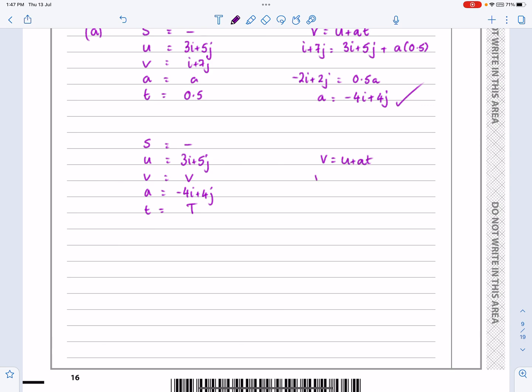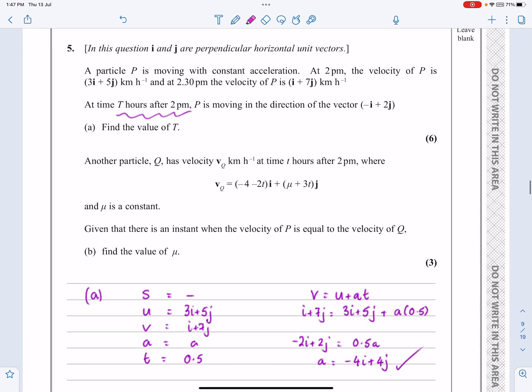Let's do it. V equals U plus AT which is then going to give me V equals 3I plus 5J and then we know the acceleration, minus 4I plus 4J, lots of T, it's capital T there. Let's make that how many I's and how many J's. I've got 3 minus 4T lots of I and I've got 5 plus 4T lots of J.